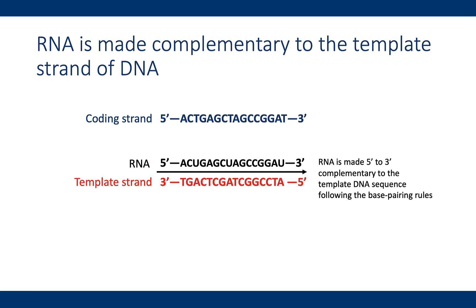However, you can determine the nucleotide sequence of RNA from the sequence of the coding DNA, just by writing down the same nucleotide sequence and swapping the T's for U's. Notice that the coding DNA and the RNA also have the same five prime to three prime orientation.